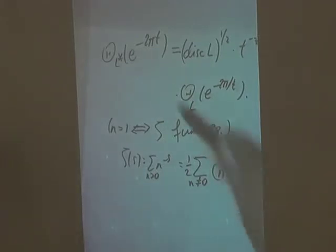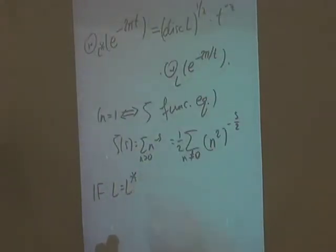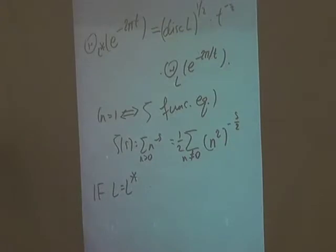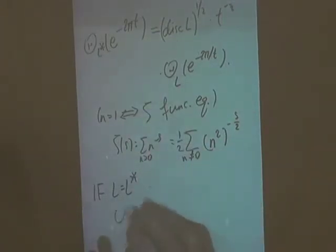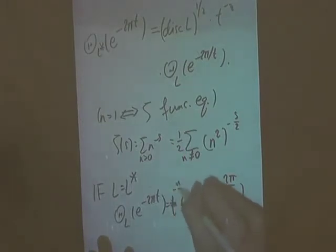So this satisfies a basic functional equation for theta functions, and it looks even nicer in the case where L = L*, i.e., the lattice is self-dual. First of all, a self-dual lattice is unimodular — it has determinant one. So the discriminant term cancels out and becomes 1, L is the same as L*, and I just get a functional equation relating the theta function to itself, with the obligatory t^(−n/2) factor.